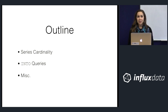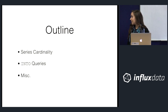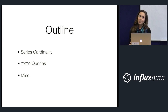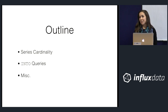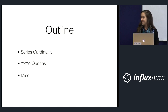The first category is series cardinality — how to think about it and how to calculate it are very common questions. The second category is INTO queries, which are great for moving data around your database and also for doing things you didn't know you could do with InfluxQL. They also have some specific, somewhat unusual behavior that hopefully you'll be aware of by the end of this talk. The last category is a couple of tips I couldn't figure out how to categorize.